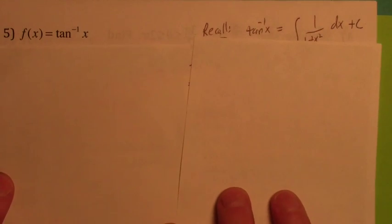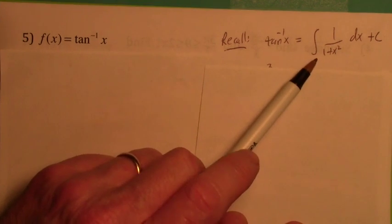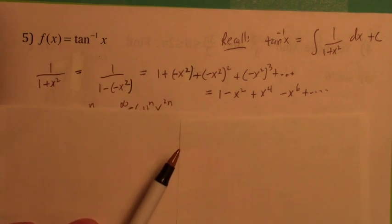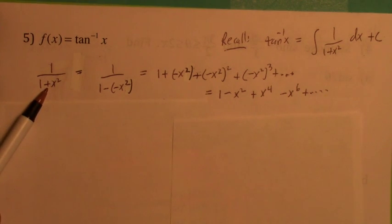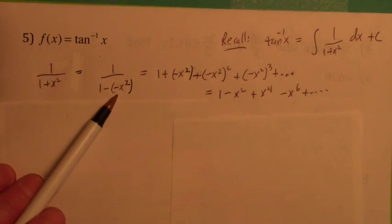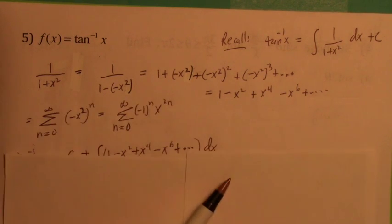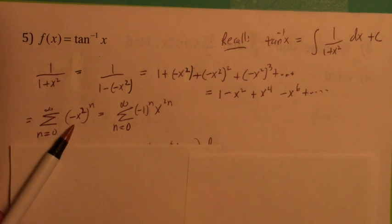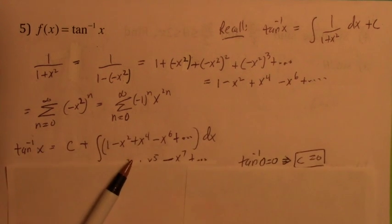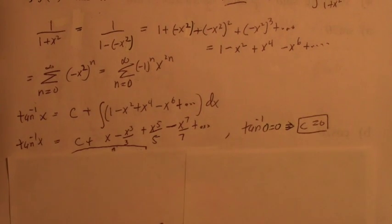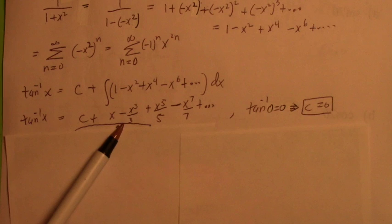How would you find a power series for inverse tangent of x? Recall that inverse tangent of x is the antiderivative of 1 over 1 plus x squared. So first we find a power series for 1 over 1 plus x squared by replacing x in the geometric power series with negative x squared. This is the power series for 1 over 1 plus x squared. Then when you integrate this power series term by term, you get a constant of integration c.